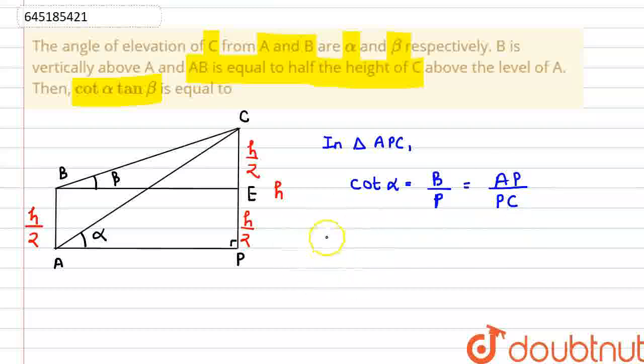Similarly, if we see in triangle BCE, we have to find the value of tan beta. So tan beta is perpendicular by base. So our perpendicular is CE divided by base BE.